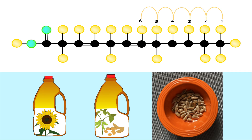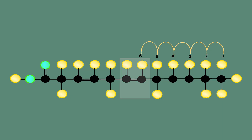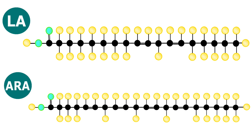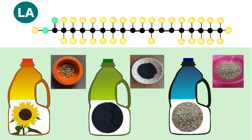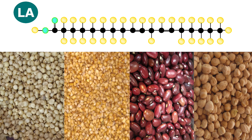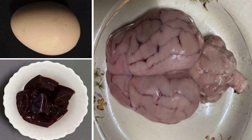Omega-6 has a double bond on the sixth carbon atom from the methyl end. Omega-6 includes linoleic acid and arachidonic acid. Linoleic acid is present in sunflower seeds, niger seeds and sesame seeds. It is also abundant in seed oils, grains and legumes. Eggs, goat liver and goat brain are also good sources.